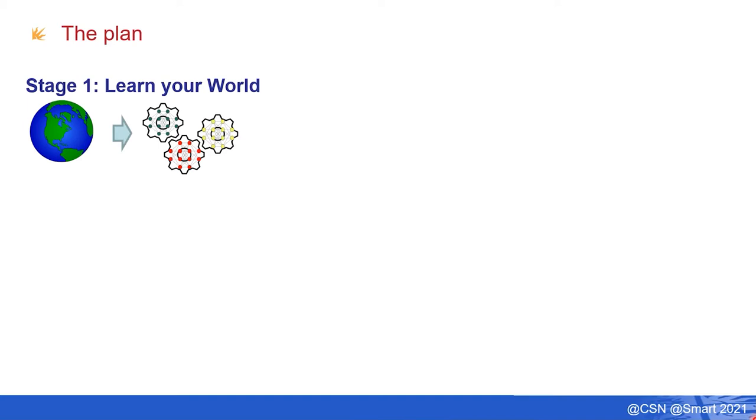Thank you, Arjun. Welcome everybody. Without further ado, I'd like to dive straight in — we've got a lot to cover. There are two elements to the talk. The first is an overarching view simplified into two stages. I'm going to talk about intelligent systems in the context of digital networks, arguing that in stage one we learn the world — specifically the model — building machinery progressively.